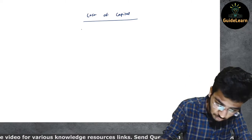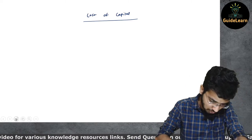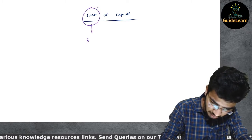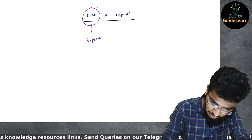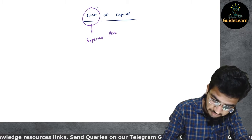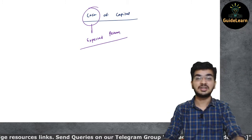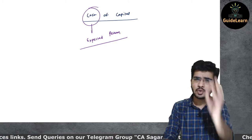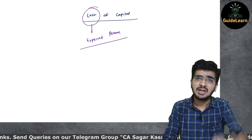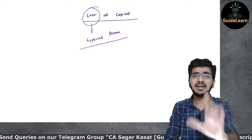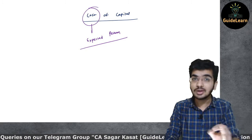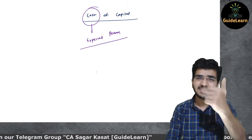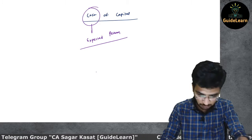So to be very clear: cost of capital is the expected return by the supplier of fund from the business — not the actual cost incurred by the entity. Now the most important question is: how do we calculate this expected return? Let me give a small example and then discuss the second most important part.